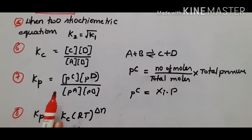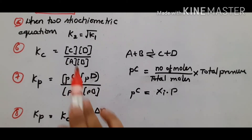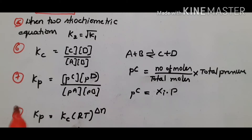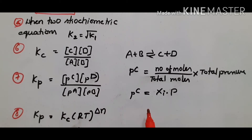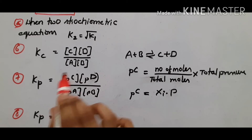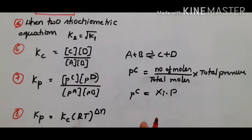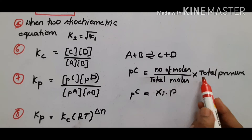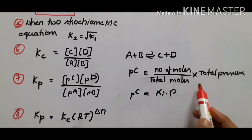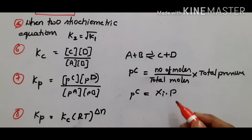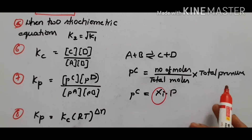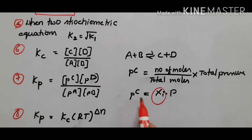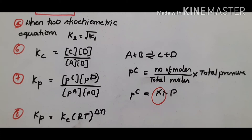Kp is calculated using partial pressures of products and reactants instead of concentrations. The partial pressure of a particular component equals number of moles divided by total moles, multiplied by total pressure. That is mole fraction into total pressure. Depending on the numerical problem, we can calculate either mole fraction or partial pressure directly.